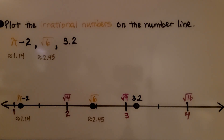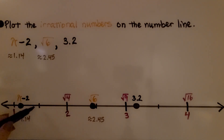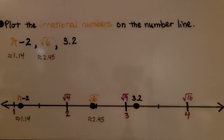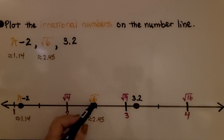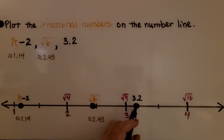Here it's telling us to plot the irrational numbers on the number line. We have pi minus 2, the square root of 6, and 3 and 2 tenths. Pi minus 2 is approximately 1.14 — it's between 1 and 1 and a half, closer to 1, so it goes about right here. The square root of 6 is approximately 2.45, not quite 2.5, so it goes about right here. And 3 and 2 tenths is a little bit greater than 3 and less than 3 and a half, so it would be about right there.